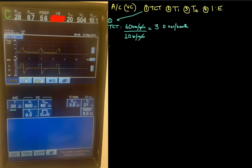The next thing is calculating our inspiratory time. In previous videos I gave you the inspiratory time — for example, 1 second. In pressure control you can set it directly by dialing it in, which is quite nice. In volume control you can't do that, and we'll get into why. So, maybe pause the tape and try to figure out how we calculate inspiratory time, expiratory time, and IE ratio before pressing play.